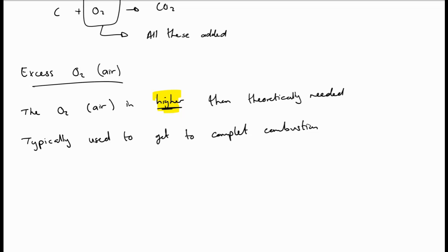Typically we do this to get complete combustion. As if we use the exact amount of oxygen, we have a very good chance of not combusting all the carbon. So excess air, excess oxygen, the higher amount of oxygen fed to the system to try and get to complete combustion. Higher than the theoretical value needed.